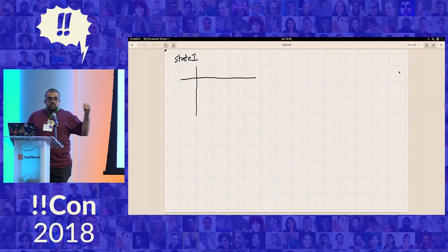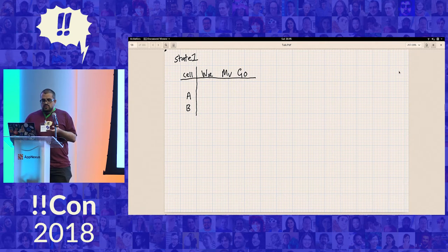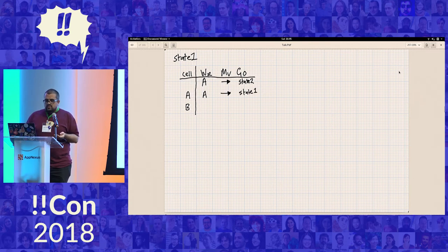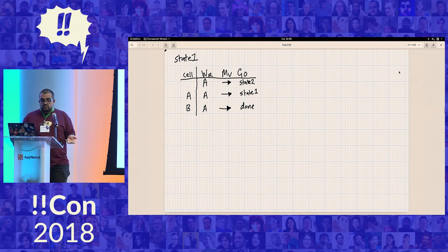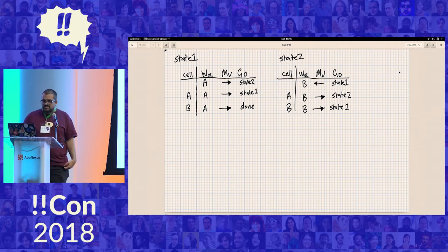So to have this in a kind of compact way, I'm going to draw a little table, which is for state one, if the thing under the head is empty or A or B, then we do the following: write, move left or right, and then go to which state. So I'm just going to give an example here. If the head is over a blank, we move right and go to state two. If the head is over an A, we move right and go to state one. And if the head is over B, we move right and we're done. We stop. And then there's just another state two, just for actually having an illustrative example that does something.